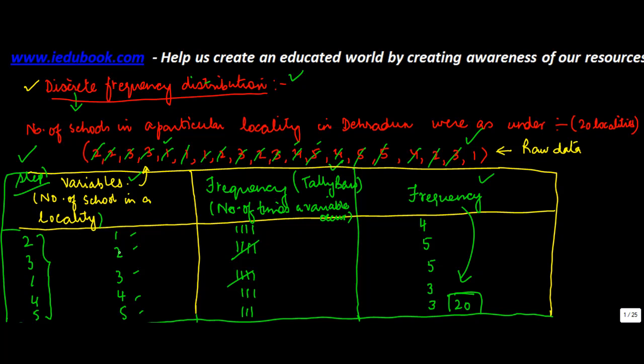Now what happens is, in certain cases, if the number of observations or the variables are very large. What we saw here was that the variables were only 1, 2, 3, 4, 5. Right? So the number of variables were not very large.